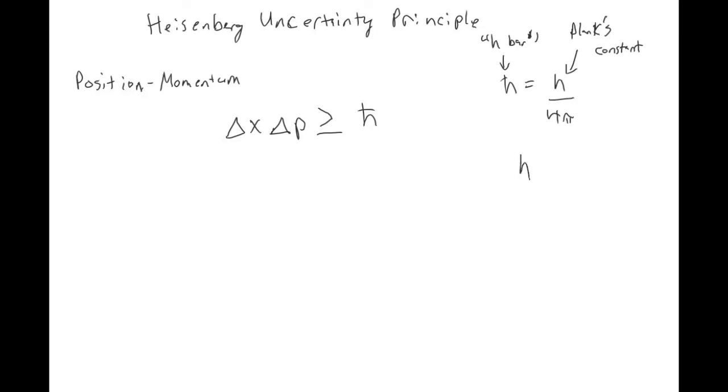We can go ahead and calculate what h bar is by using h: 6.626 times 10 to the minus 34 divided by 4 pi equals 5.27 times 10 to the negative 35.